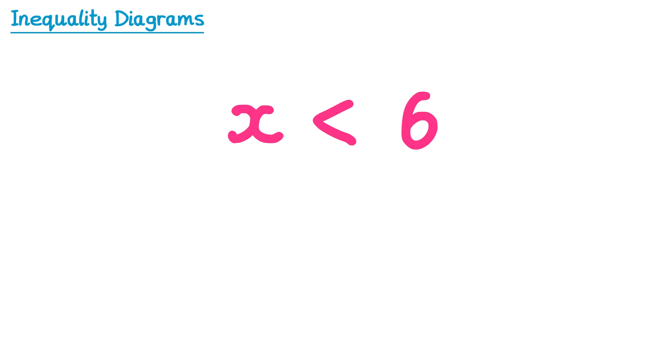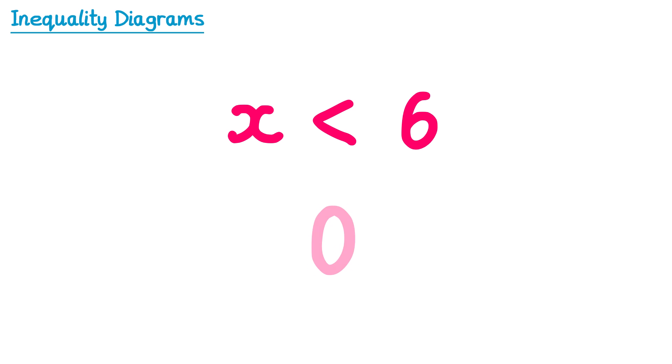Now that we have the knowledge of those symbols, we can read statements that look like this. This says x is less than 6, so it means that x is any number that's less than 6. For example, 5 — 5 is less than 6. Or 2 — 2 is less than 6. Or even 0, that's less than 6. And so are negative numbers — negative 3 is less than 6.